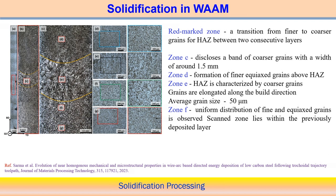Zone C shows a band of coarse grain structure having a width of around 1.5 mm. Zone D shows formation of fine equiaxed structure above the heat affected zone.